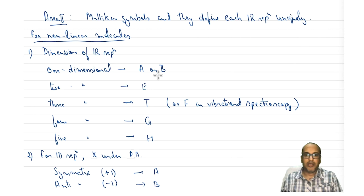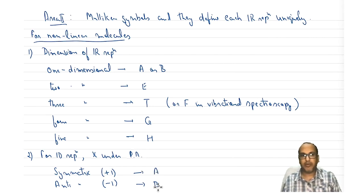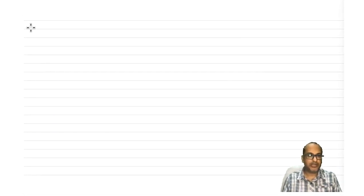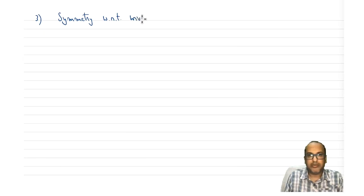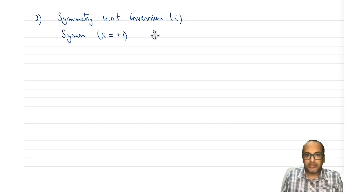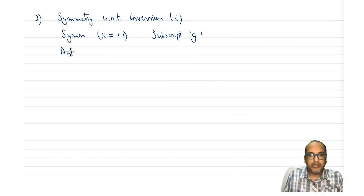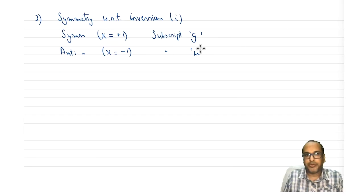For one-dimensional representations, the character under the principal axis defines A or B. If the character is symmetric — that is, trace equals plus one — the symbol is A. If it is anti-symmetric — trace equals minus one — the symbol is B. The third rule is symmetry with respect to the inversion center. If it is symmetric (character = +1), the subscript is g (gerade); if anti-symmetric (character = −1), the subscript is u (ungerade).